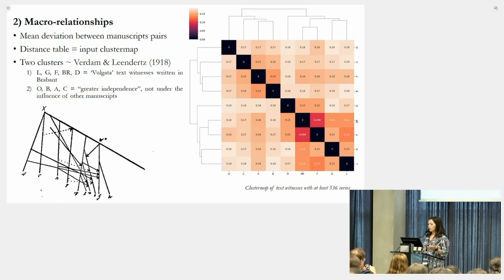In 1918, two researchers, Verdam and Leendertz, created a stemma of the transmission, a hypothesis of the genealogical relationships between manuscripts. They also find two main clusters. But this stemma is only based on the 10 witnesses that were known by them. It's funny how they talk about it. They say the first ones are the Vulgata, not that important because they are under the influence of other manuscripts. But the other ones are of greater independence because they are not under the influence of other manuscripts.